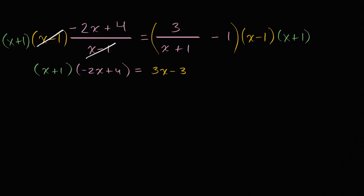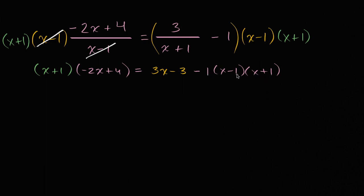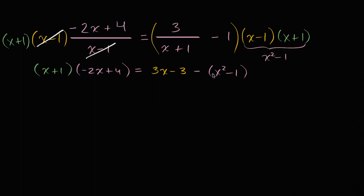Then we subtract one times x minus one times x plus one. I multiplied x minus one times x plus one times each term on the right: for the first term the x plus one cancelled, giving three times x minus one; for the second term I just multiplied it by both factors. Now, x plus one times x minus one is x squared minus one, so that minus term becomes minus x squared minus one.